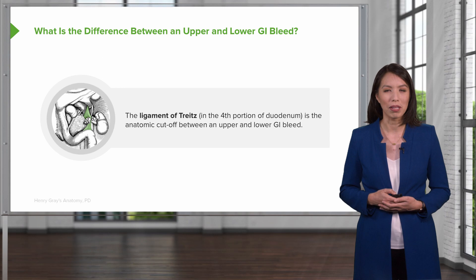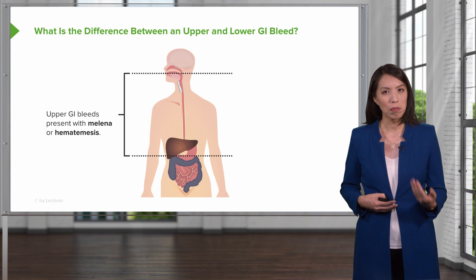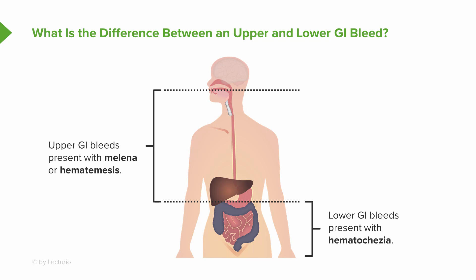Upper and lower GI bleeds present differently. With an upper GI bleed, patients tend to come in with melena, which is dark or black colored stools, or they may have hematemesis, which is the vomiting of bright red blood. Lower GI bleeds, on the other hand, tend to present with hematochezia, which is bright red blood passed from the rectum.